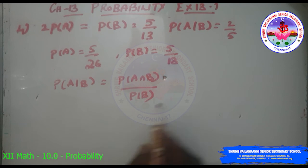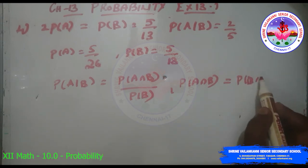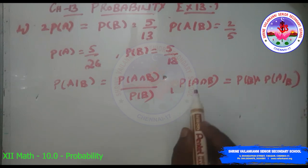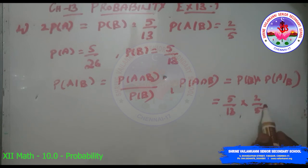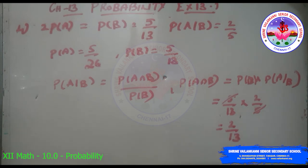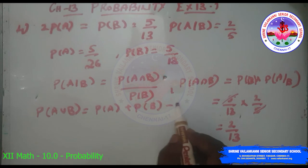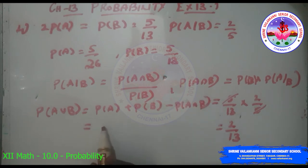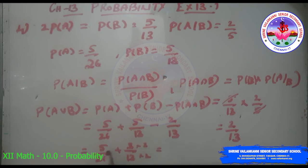P(A∩B) = P(B) × P(A|B) = (5/13) × (2/5). The 5s cancel, giving P(A∩B) = 2/13. Now P(A∪B) = P(A) + P(B) − P(A∩B) = 5/26 + 5/13 − 2/13. Simplifying: 5/13 − 2/13 = 3/13. Then 5/26 + 3/13 = 5/26 + 6/26 = 11/26. So P(A∪B) = 11/26.